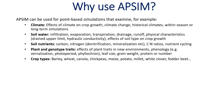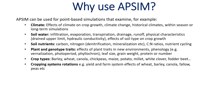APSIM has many different crop types — just a few examples include wheat, barley, chickpeas, maize, potato, and fodder beet — and many different crop types are well designed as different crop modules.